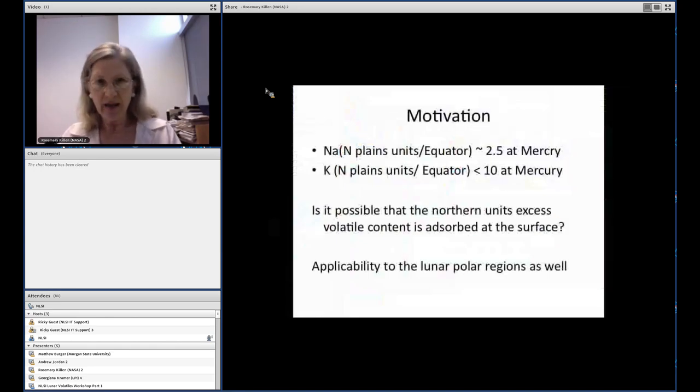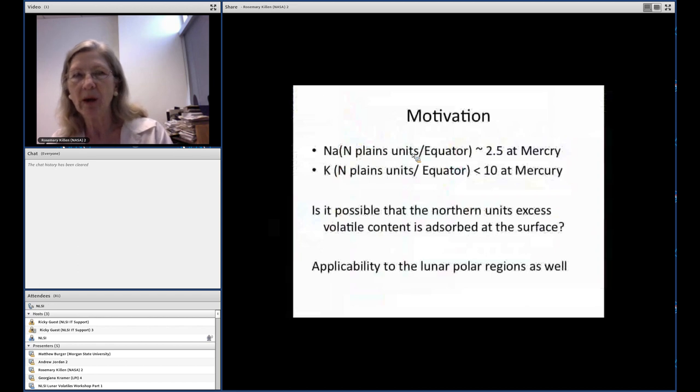I'm talking about limits to adsorbed atoms. The motivation for this is observations at Mercury, where with the gamma-ray spectrometer they saw an enhancement in the northern plains units of both sodium and potassium. The ratio for sodium of the northern plains units to the equator was two and a half, and for potassium it was up to 10. So the question was, is the northern excess volatile content adsorbed on the surface?